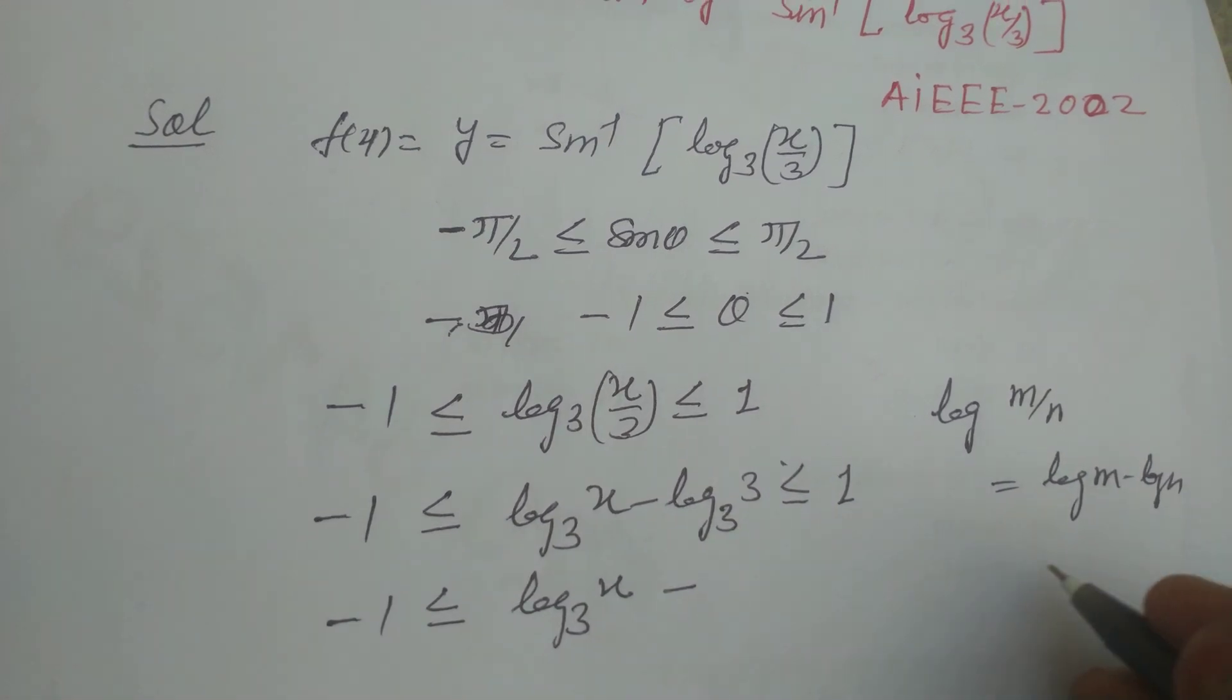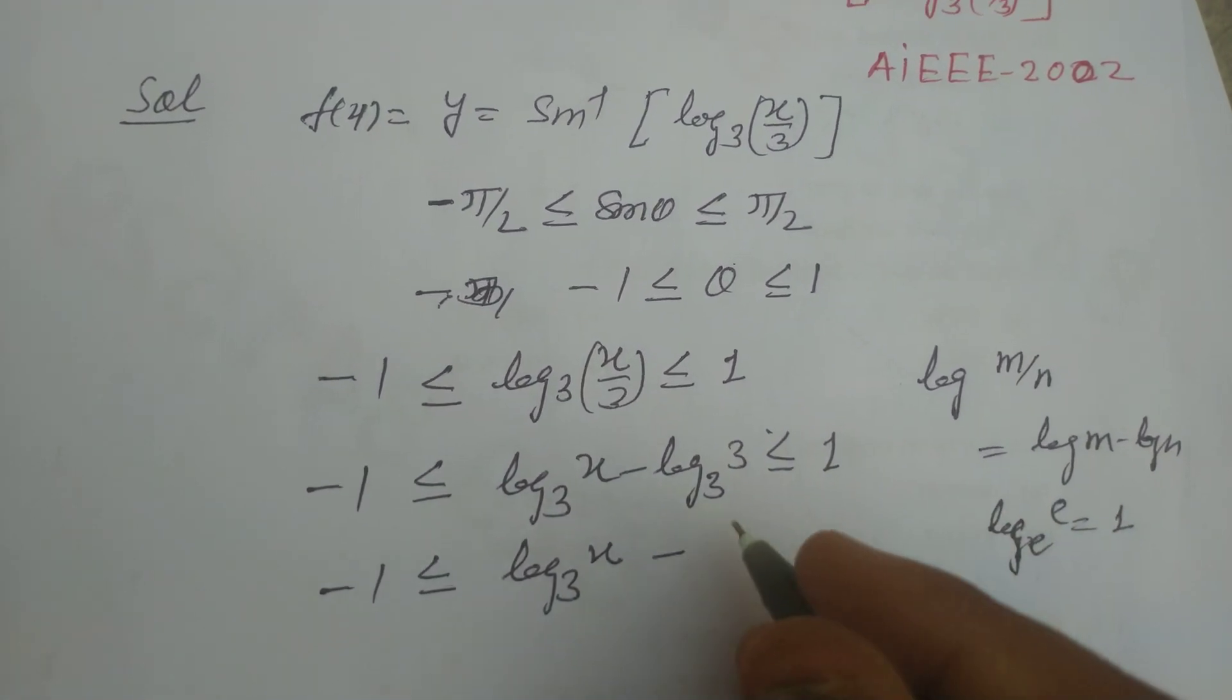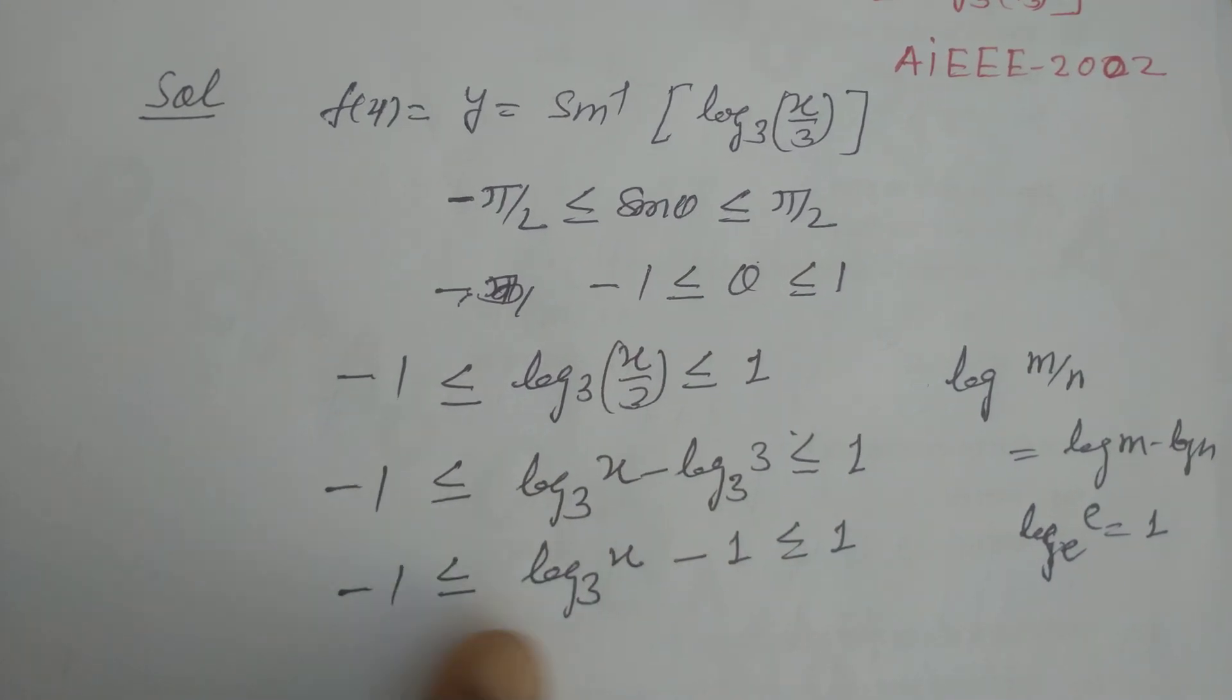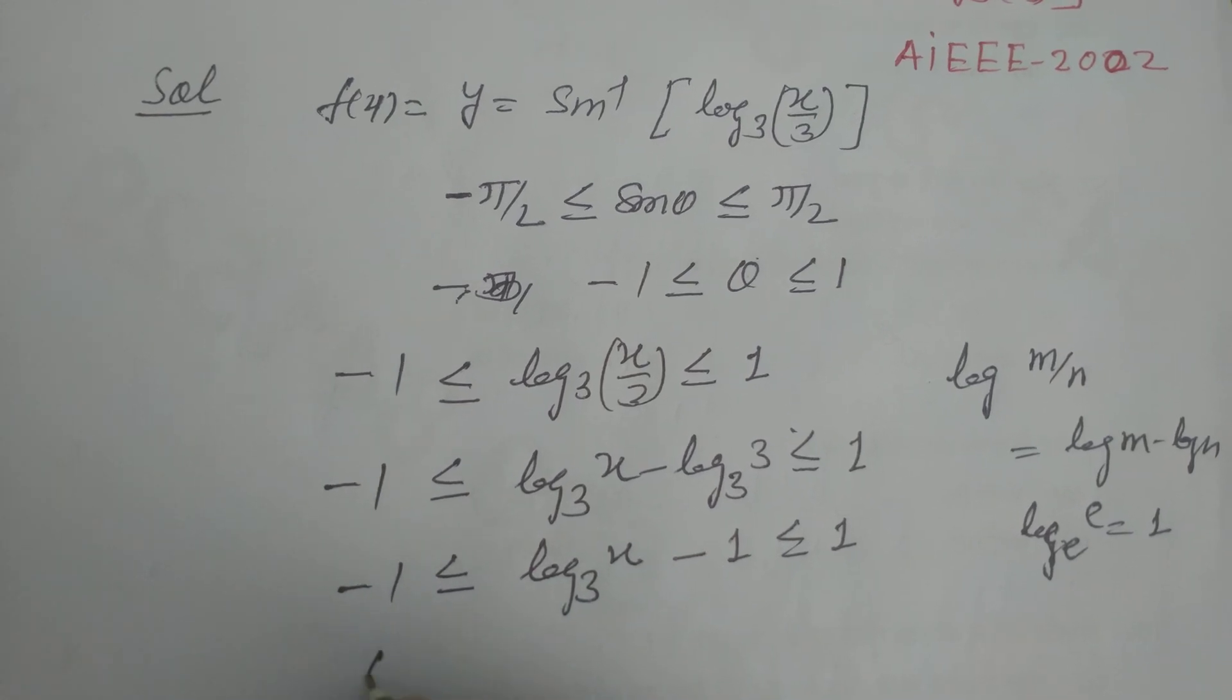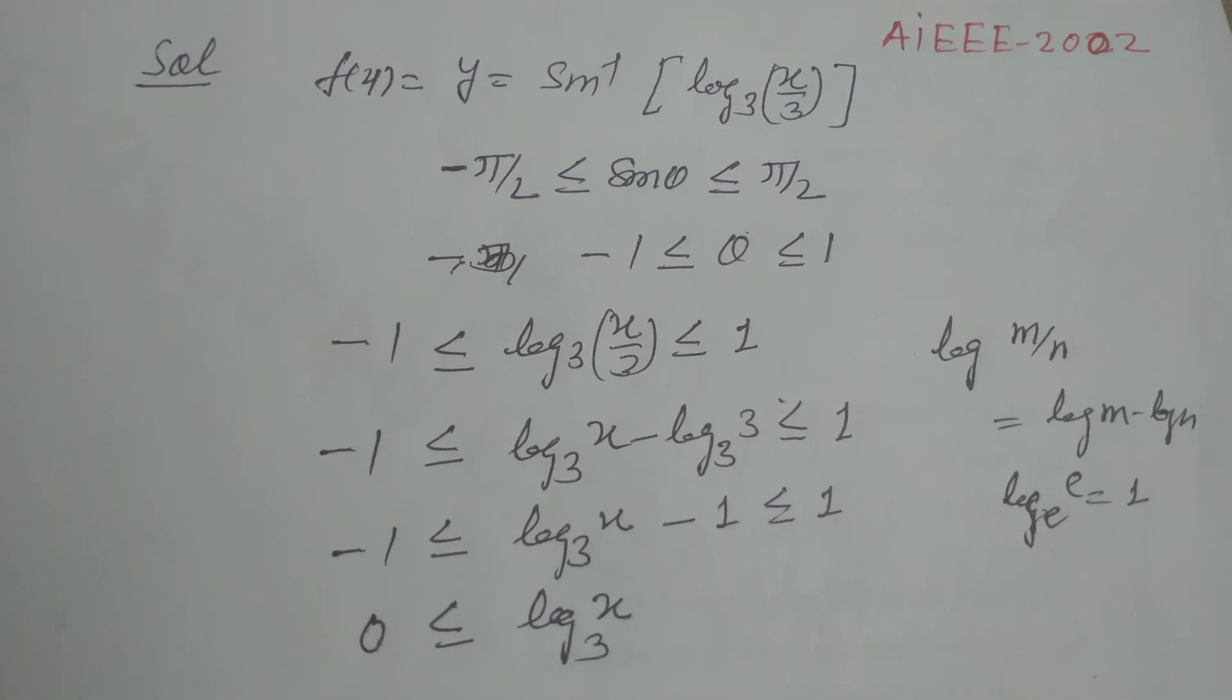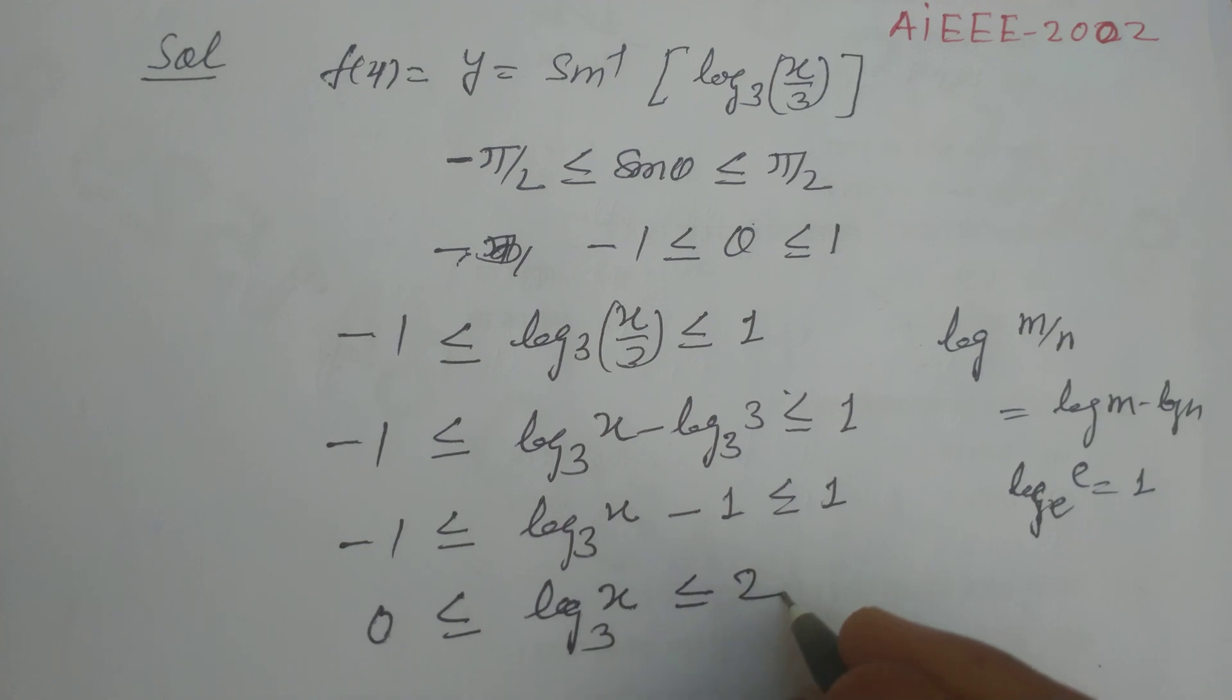And you also know that log base e of e equals 1. So this is 1. Now we add 1 to both sides. So this becomes 0 and this is log x and this will be 1 plus 1 equals 2.